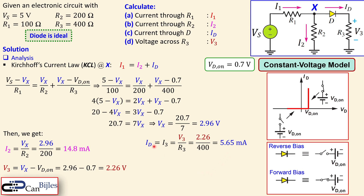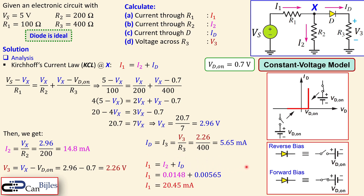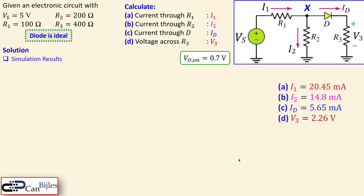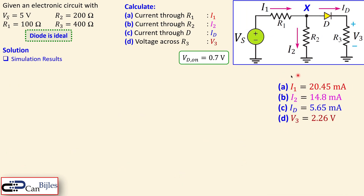Now that we know id and i2, we use the KCL equation at node X: i1 = i2 + id = 14.8 + 5.65 = 20.45 mA.